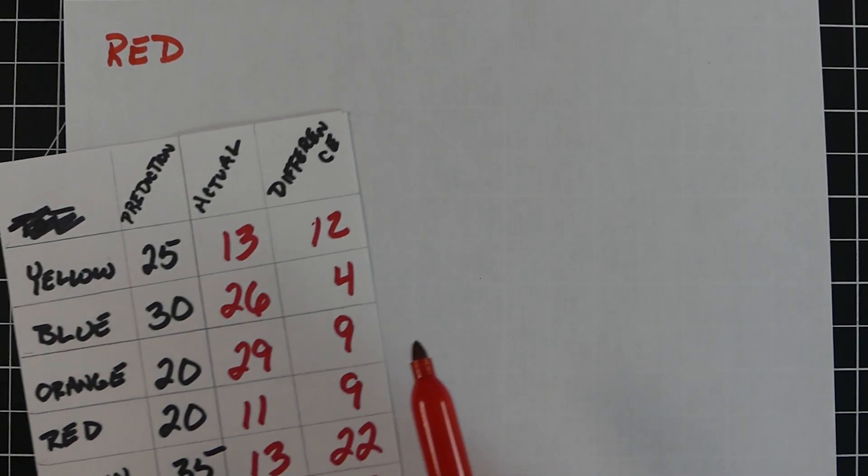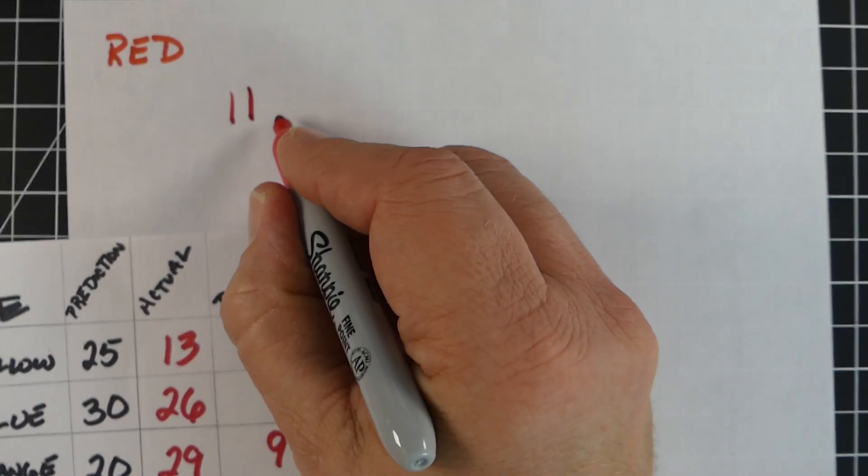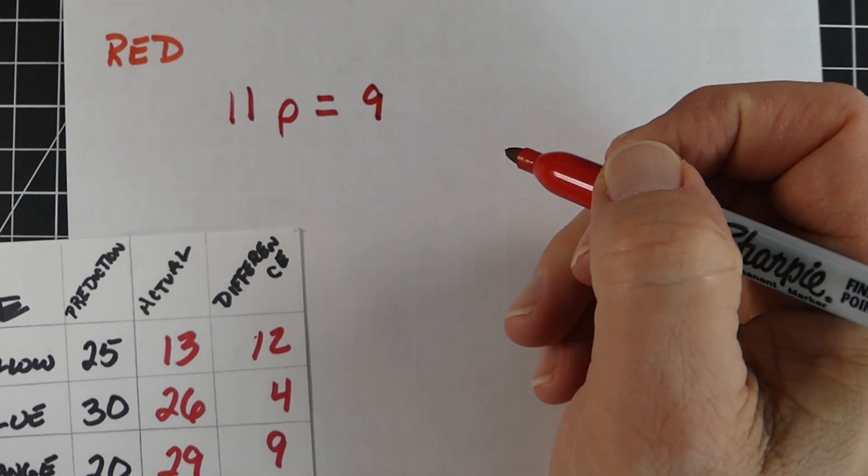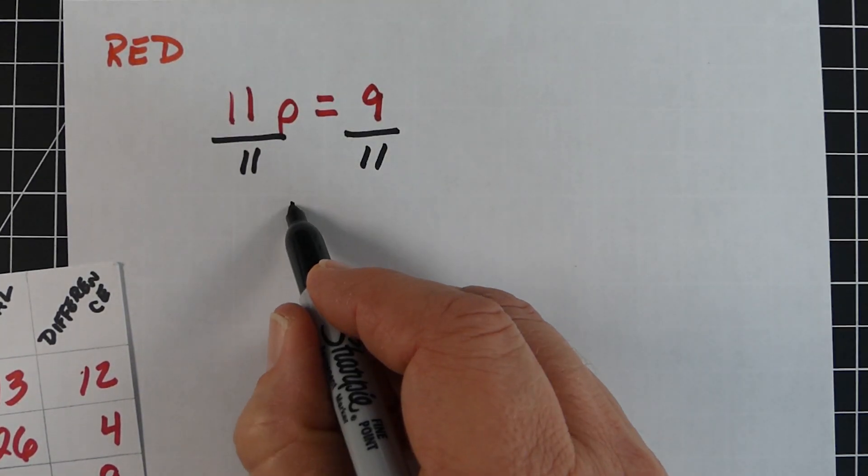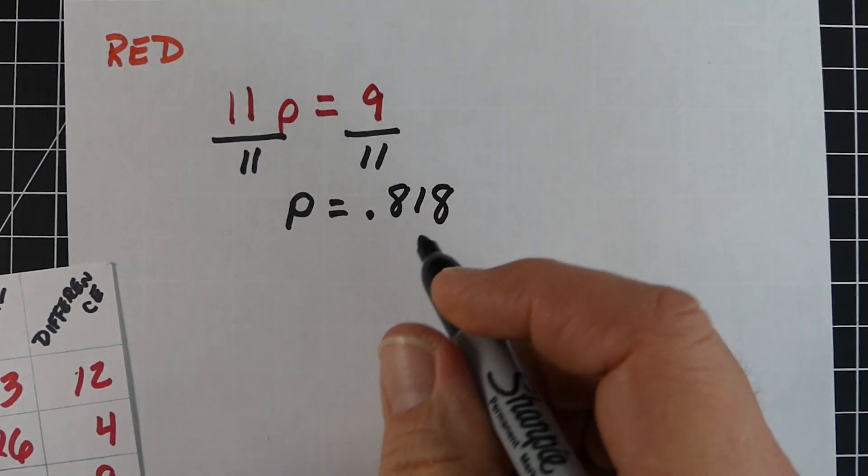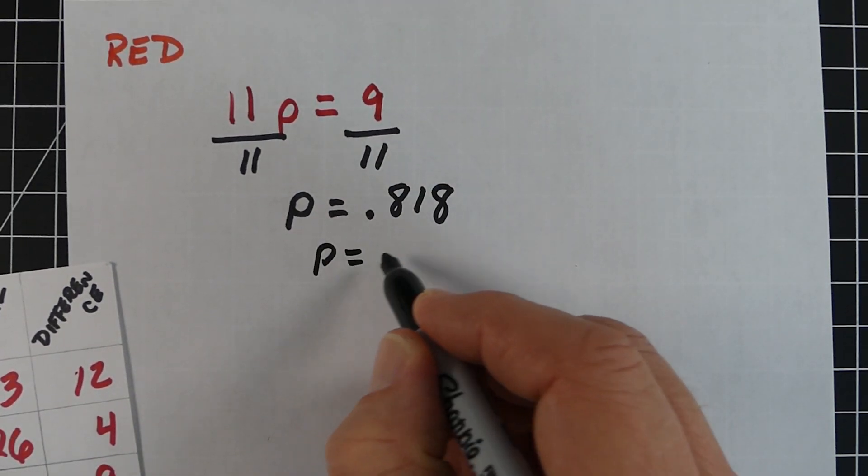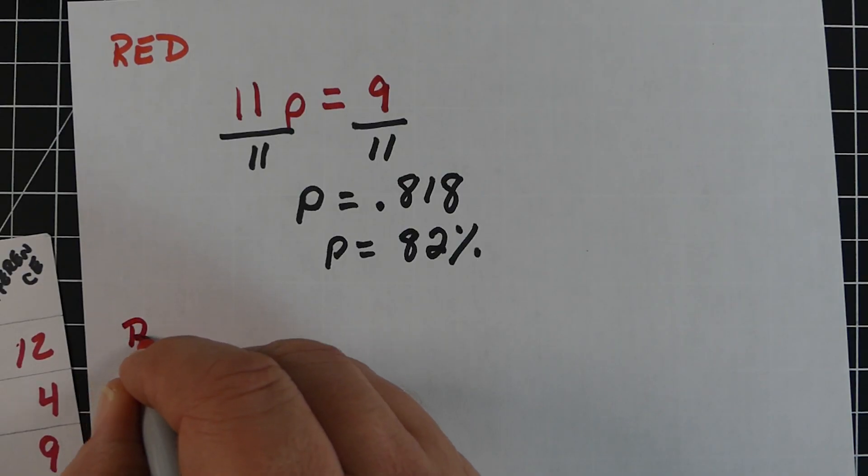For red, the correct amount was 11. I thought 20, so I was off by 9. Divide both sides by 11, so P equals 0.818 and it goes a little further. We'll call this one 82% - the 8 would actually round up the 1.